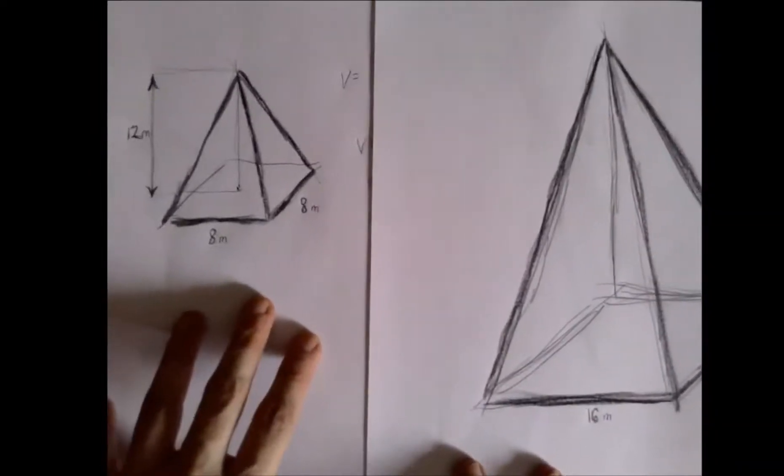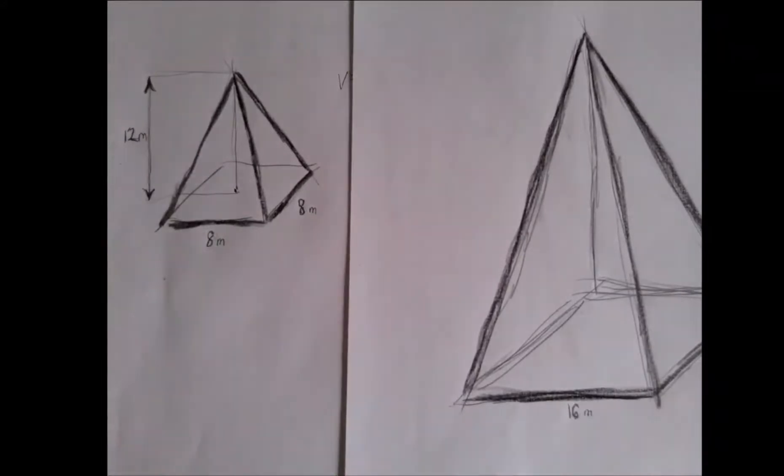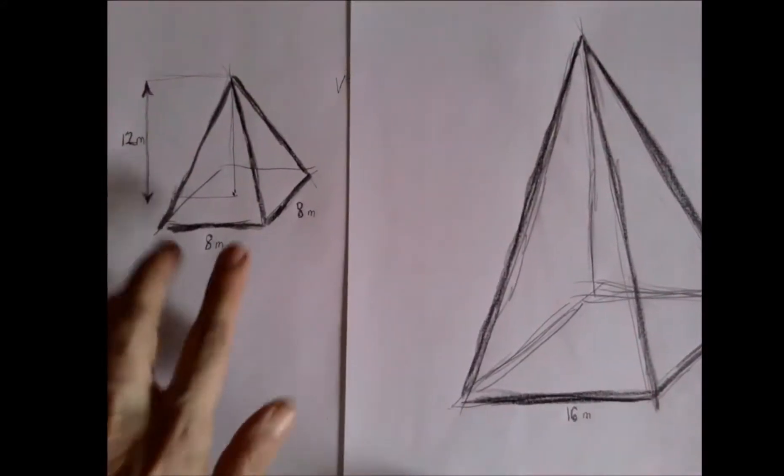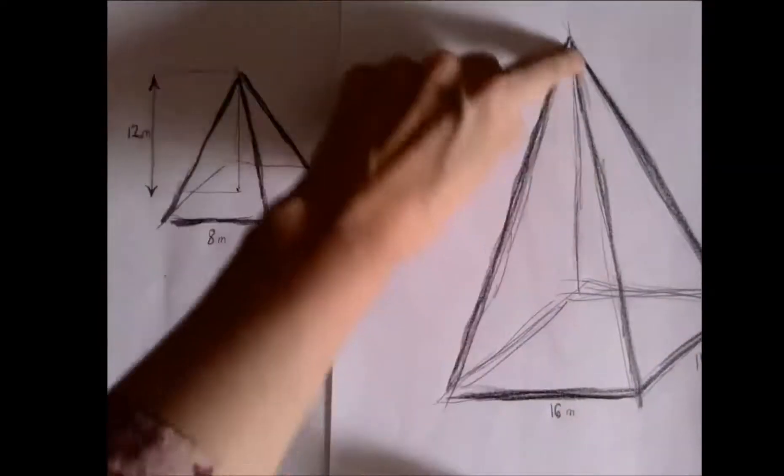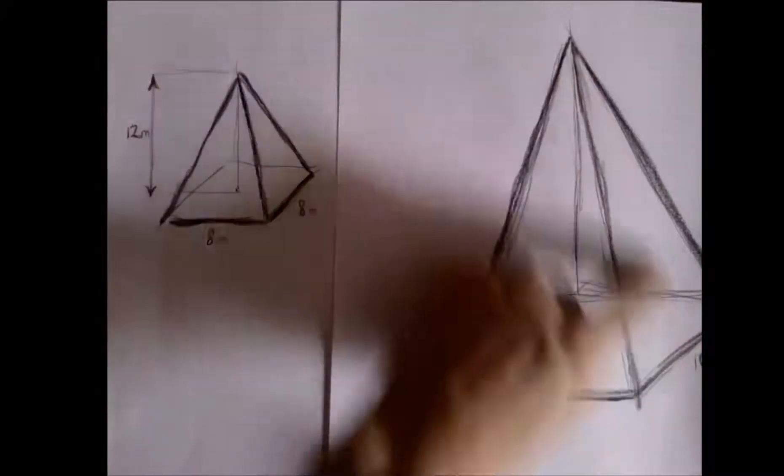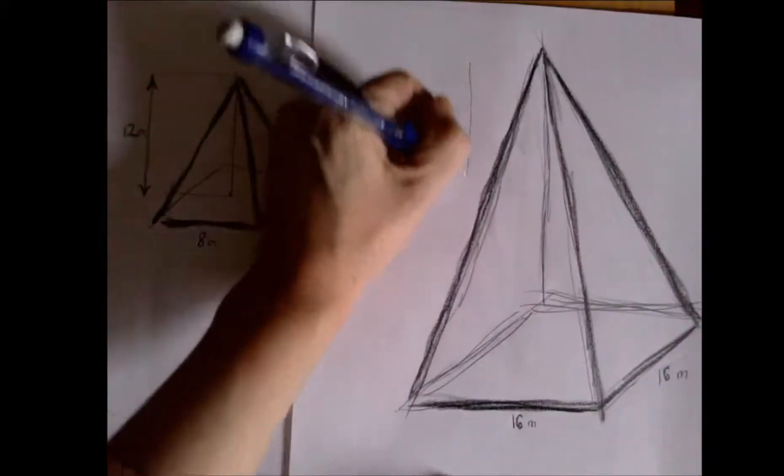If two three-dimensional objects are similar, that means that every single length is proportional. So if the base went from 8 to 16, that means we are going to have to double the slant height, which is the height of this triangular face, or the height also doubles.